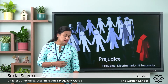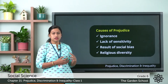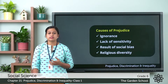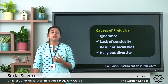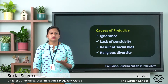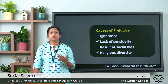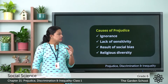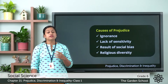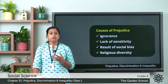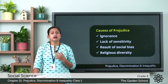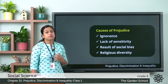Let us discuss the basic causes of prejudice. The first one is ignorance — forming an opinion without knowing the truth, ignoring evidence and proof. The next cause is lack of sensitivity, which means when people have no feeling for others, and this also leads to prejudice.